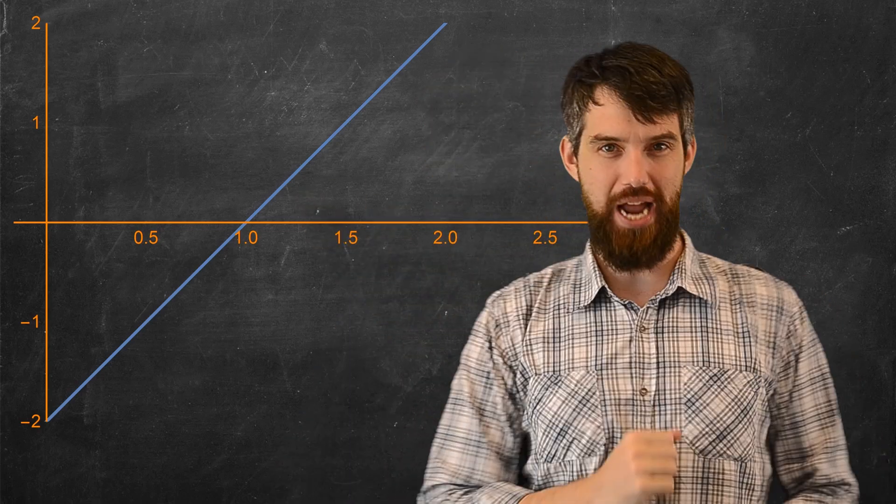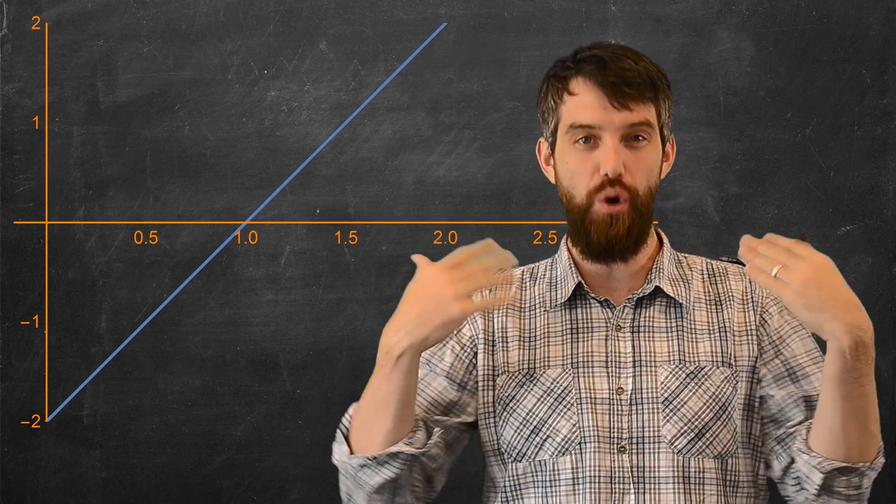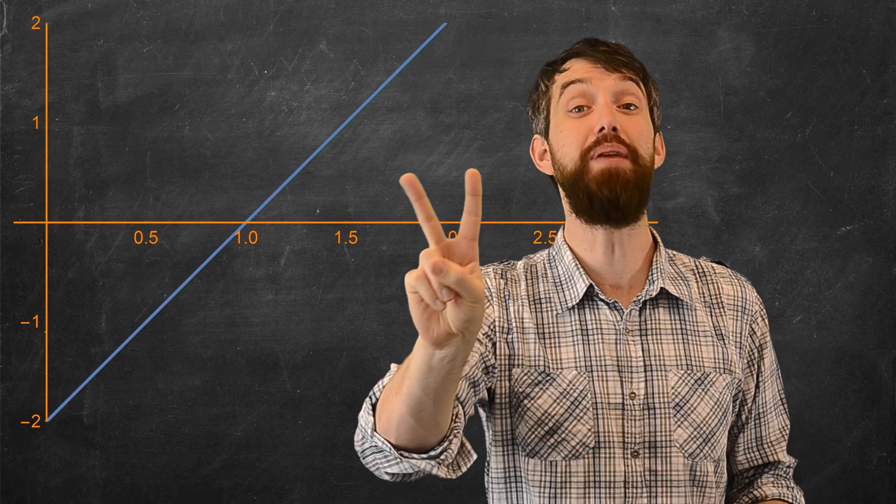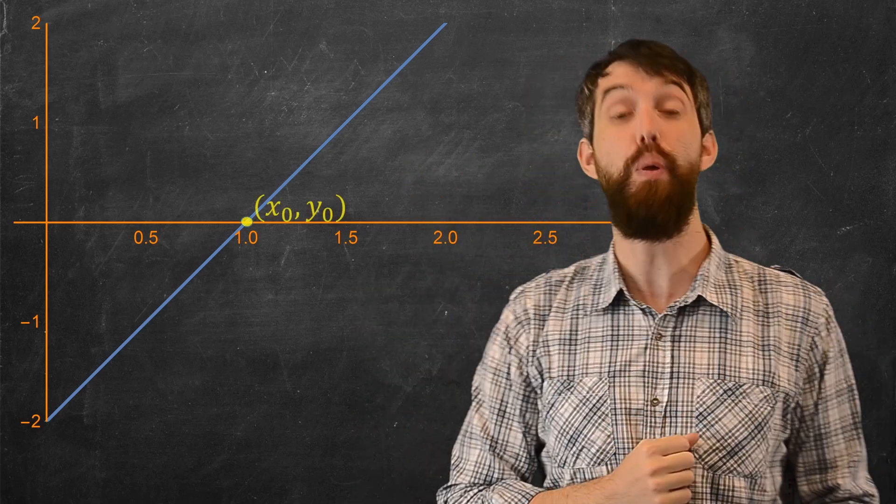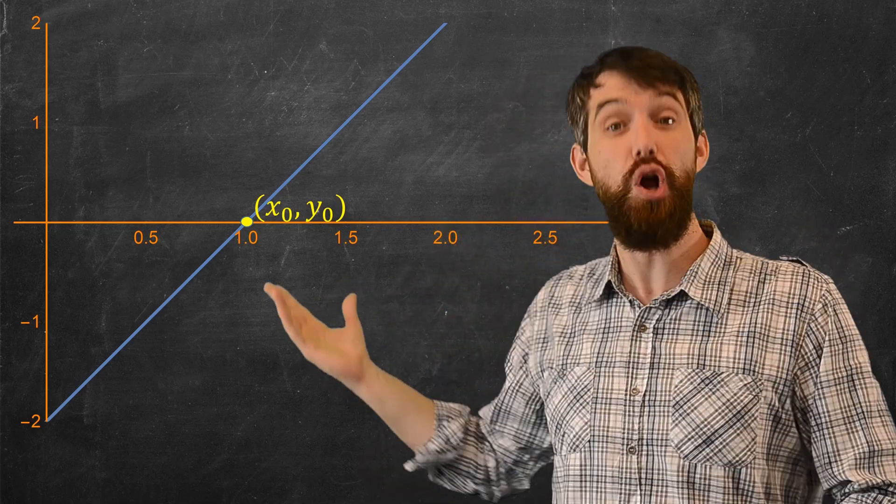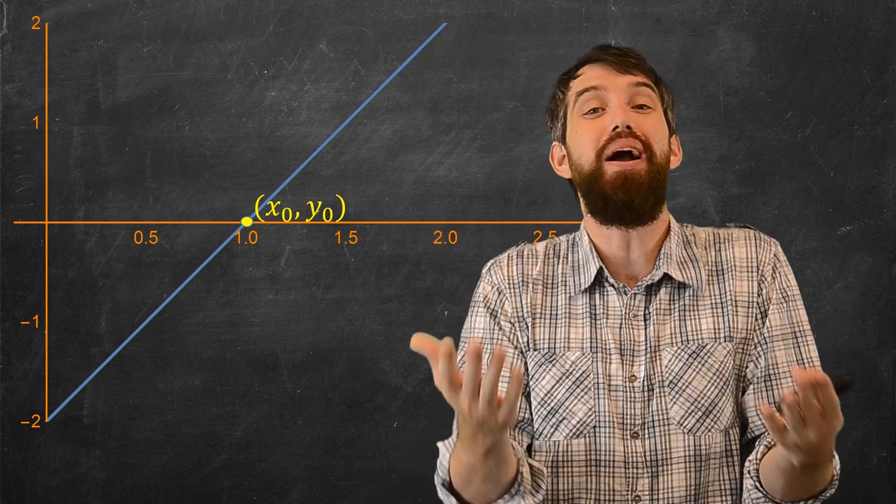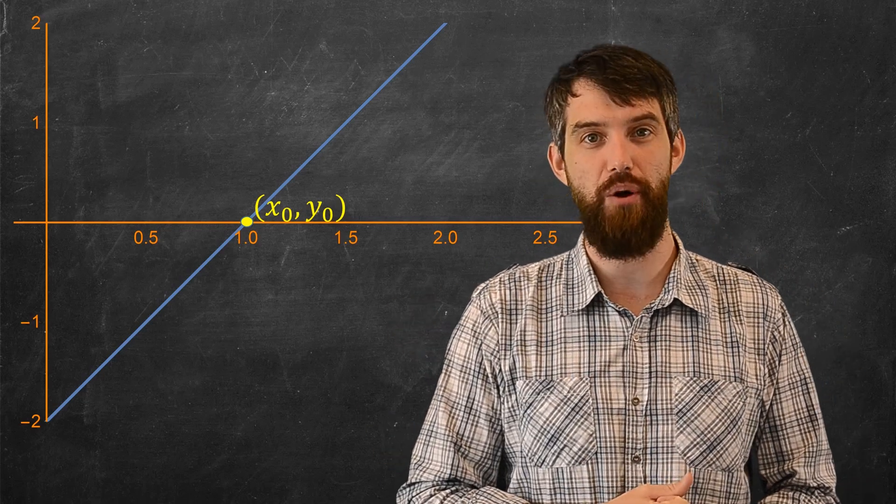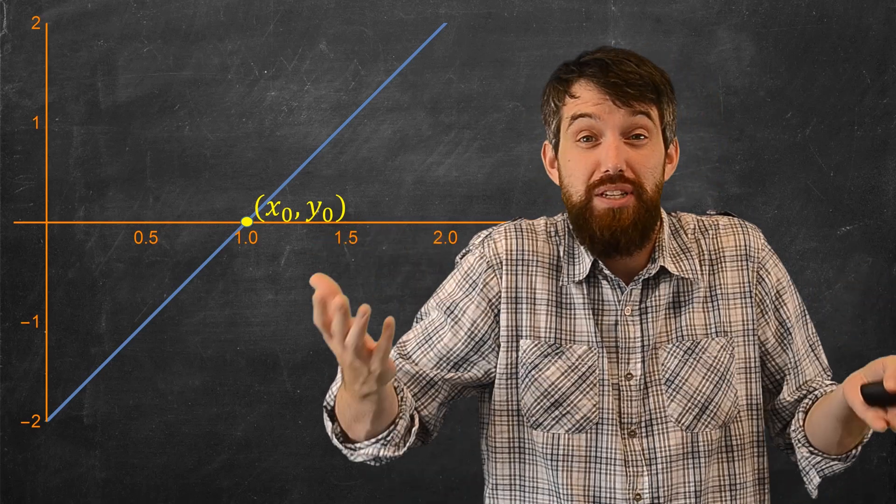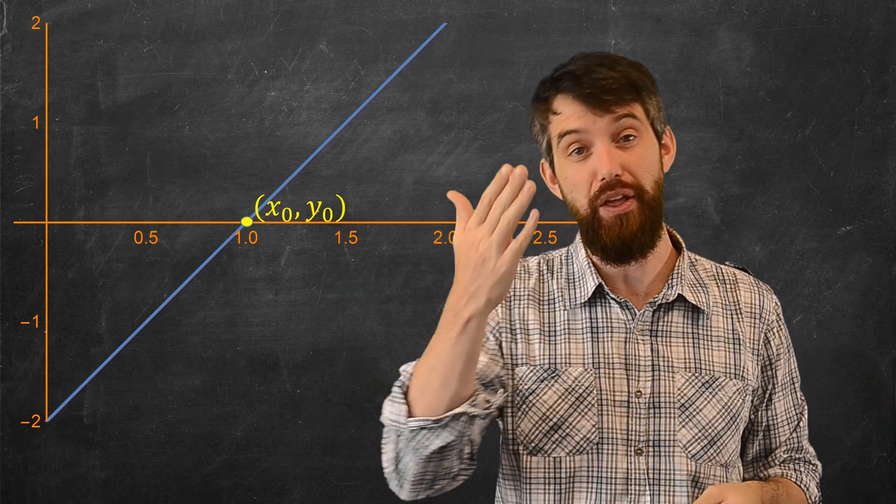Alright, so I've got some line here, and to figure out the equation of it, I'm going to need two pieces of information. The first is, I just want to have some particular point that's on the line, and I've chosen to put in x₀, y₀, some point where I might know what it is, and in this case, it looks like the point. You could choose any point on this line, it's just convenient to get one that you know.